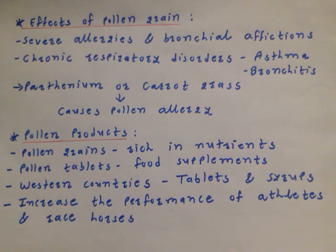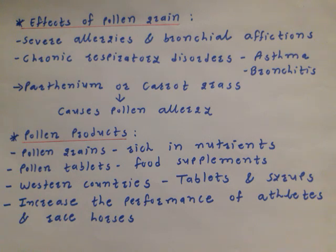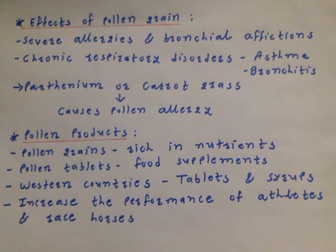Some interesting points about pollen grains — some effects of pollen grains on human beings. Some pollen grains show severe allergies and bronchial changes in humans. Sometimes, through allergy to some pollen grains, chronic respiratory disorders develop, for example asthma and bronchitis. In carrot grass or Parthenium, pollen grains cause pollen allergy. This way, pollen grains can cause allergy and some respiratory disorders in human beings.